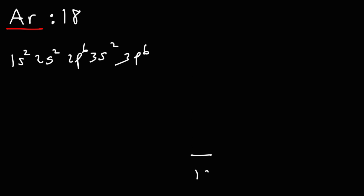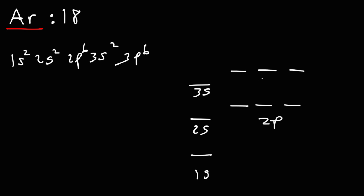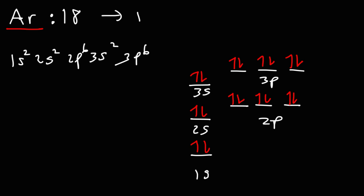Now we're going to draw the orbital diagram for this element. We have the 1s orbital, the 2s orbital, the 2p sub-level, the 3s sub-level, and then 3p. Notice that each of these orbitals is completely filled with electrons. We have a total of 18 electrons, so we don't have any unpaired electrons. Therefore, this substance is diamagnetic.